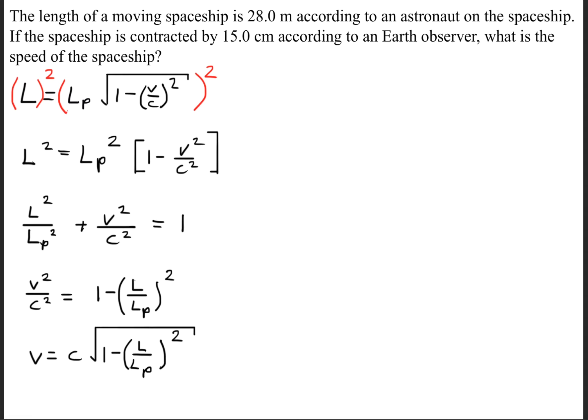We'll take the square root on both sides and cross multiply so that we get the velocity equals the speed of light times the square root of 1 minus the length over the proper length to the second power.